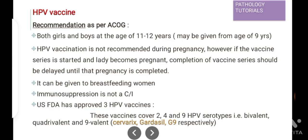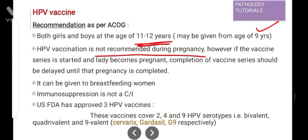This vaccine is recommended for both girls and boys at the age of 11 to 12 years, and it may be given from the age of 9 years. These are recommendations as per the American College of Obstetrics and Gynecology. This vaccination is not recommended during pregnancy. However, if the vaccine series is started and the woman becomes pregnant, completion of the vaccine series should be delayed until the pregnancy is completed. The vaccine is given during the breastfeeding period also, and immune suppression is not a contraindication.